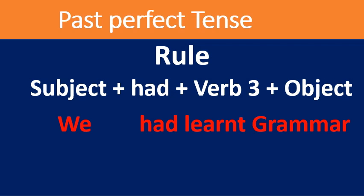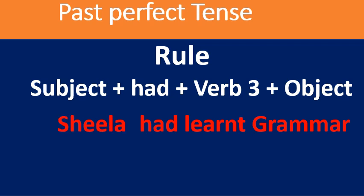For example: 'We had learnt grammar.' One more example: 'Sheila had learnt grammar.' Here 'Sheila' is the subject, 'had learnt' uses the third form of the verb — that is past perfect — and 'grammar' is the object. This is what you need to know about past perfect tense.